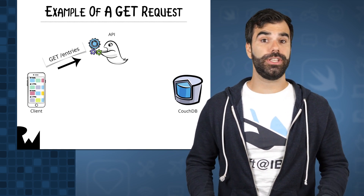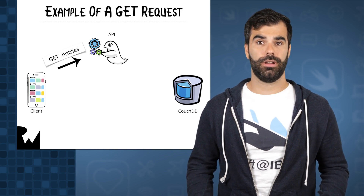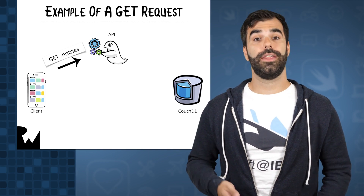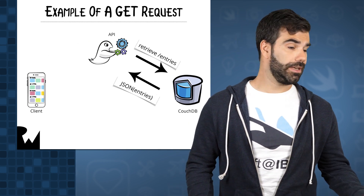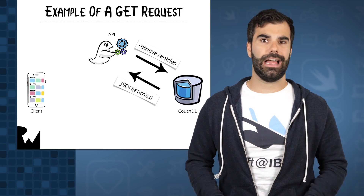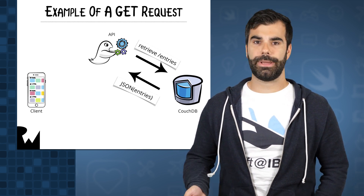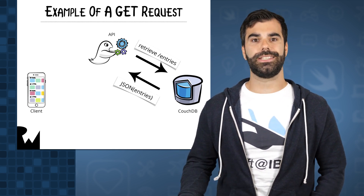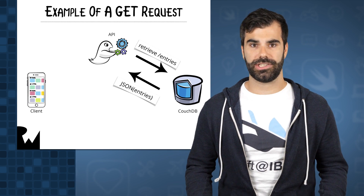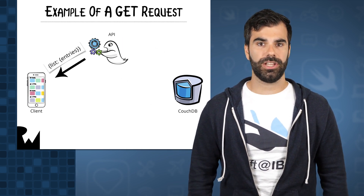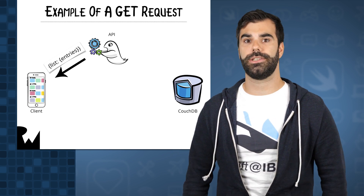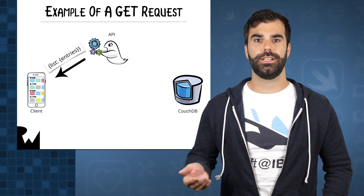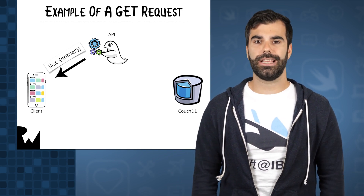Let's say a client wants to see all of the users for a certain application. The client sends a GET request to the API asking for a collection of profiles. The API receives this request, turns around to the database and says it needs to retrieve a collection of profiles. The database responds with a JSON collection of profiles. The API now has these profiles, forms a response, and sends it back down to the client. The API stays stateless because, while it could have made a request to the database to change something, the API itself did not change at all. It washes its hands and prepares for the next request.